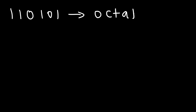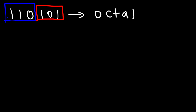So what do you think we need to do? We separate it into groups of three. The first group of three we have one zero one, and the second one is one one zero. The first digit has a value of one, the second we multiply by two, and the third by four.